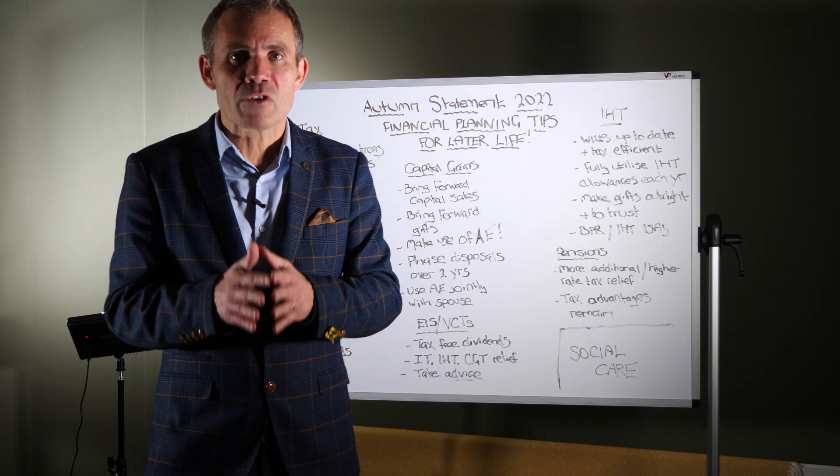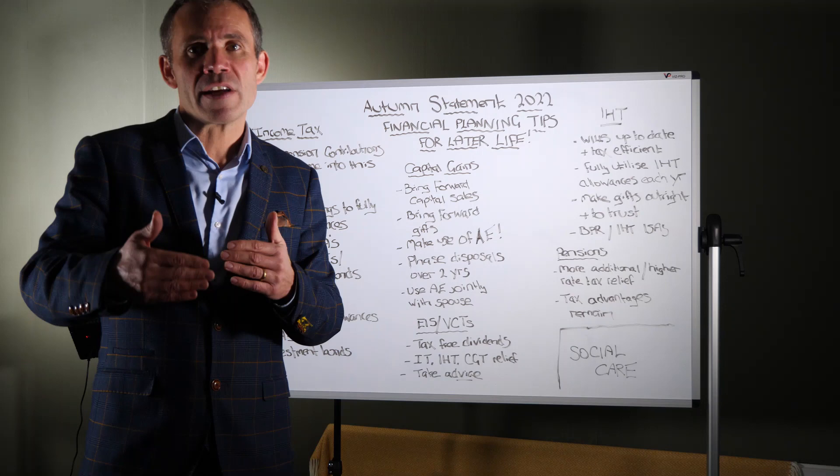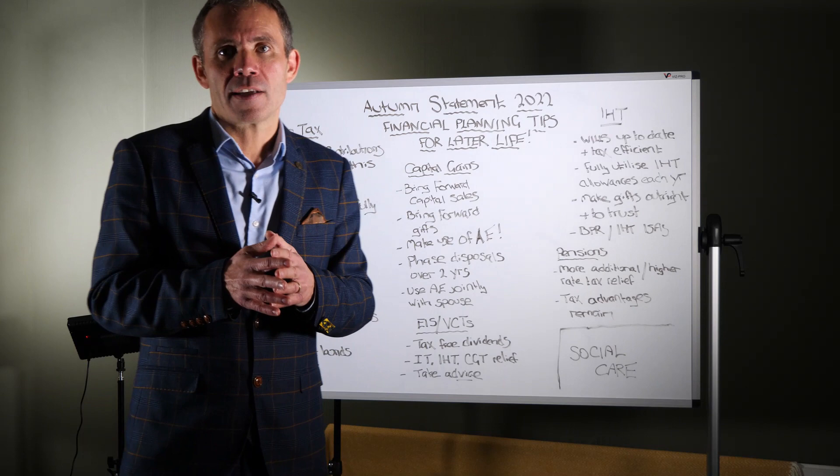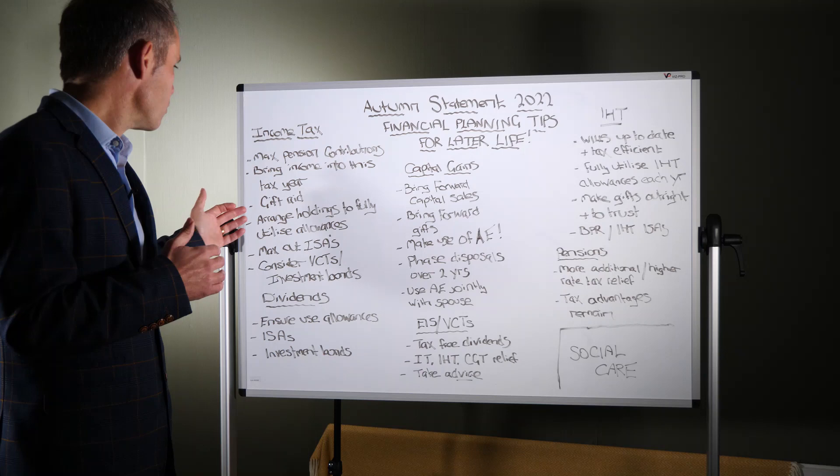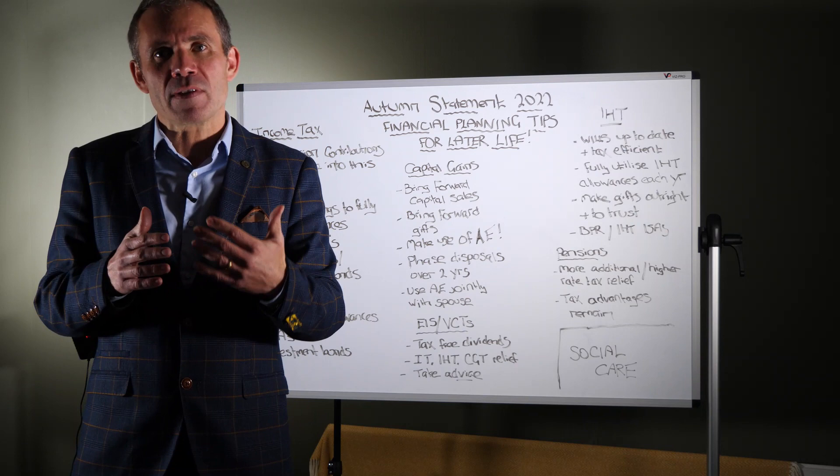Bring income into this tax year. Because all of these changes are going to start in April 23, if you can in any way control your income and bring it forward into this tax year, that could be an efficient way of taking your income, especially as the thresholds are becoming more punitive from April of next year. Don't forget gift aid. So any gifts that you're making to charity, make sure you tick that box and get full tax relief on any gifts that you're making to charity.